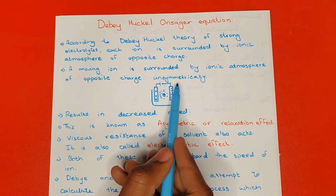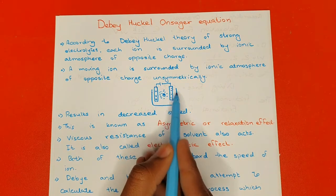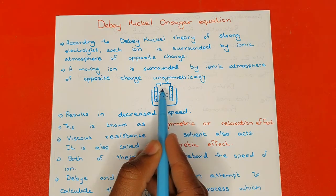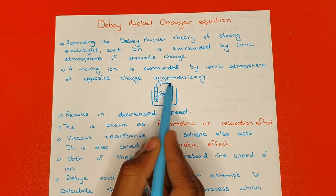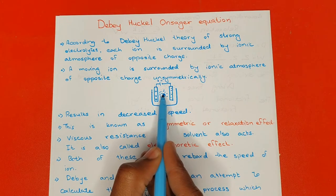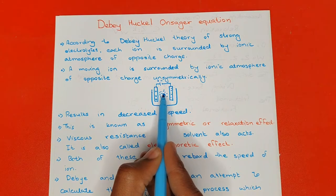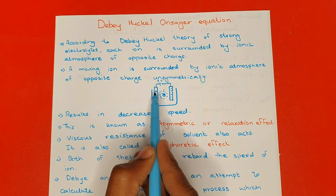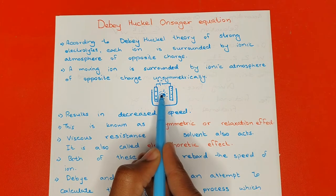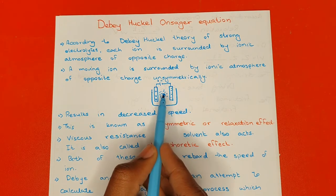If I have two electrodes in a beaker containing an electrolyte, connected to the positive and negative terminals of a battery, this positive charge will be attracted towards the negative electrode. As this positive charge moves through the electrolyte, the negative ions in the electrolyte move towards the positive electrode.